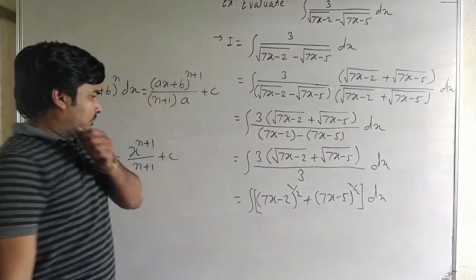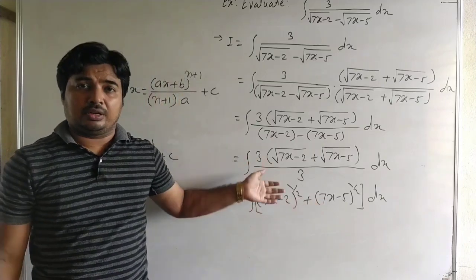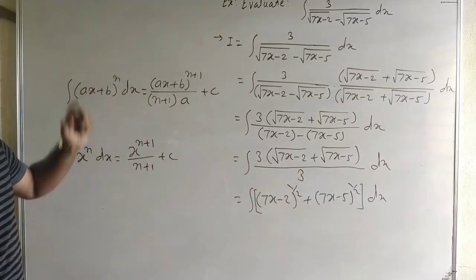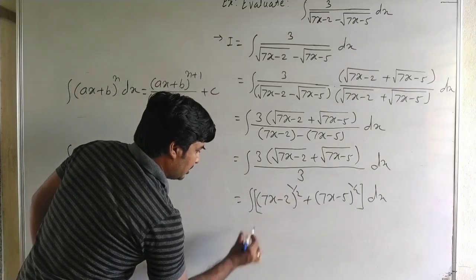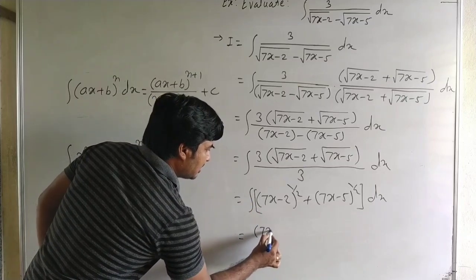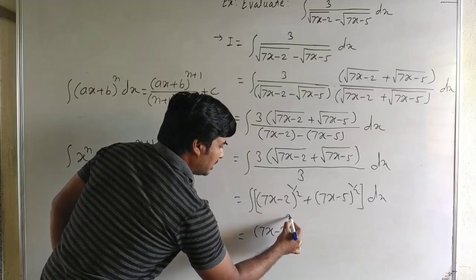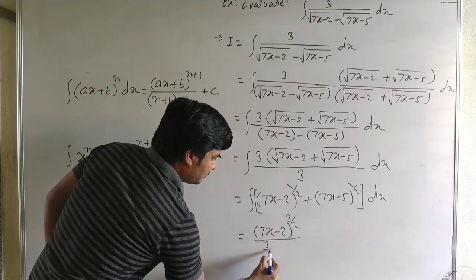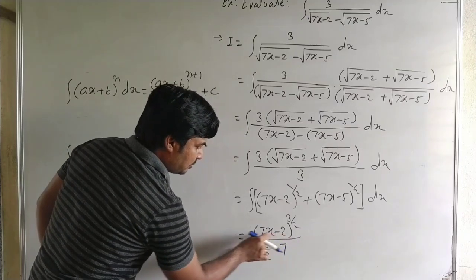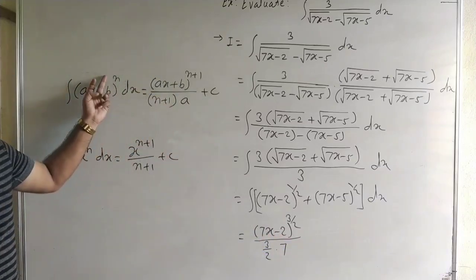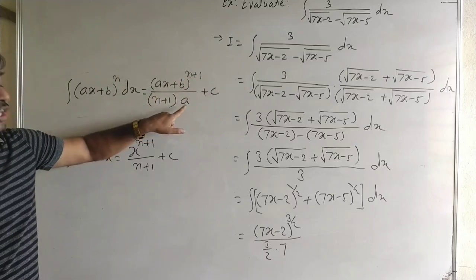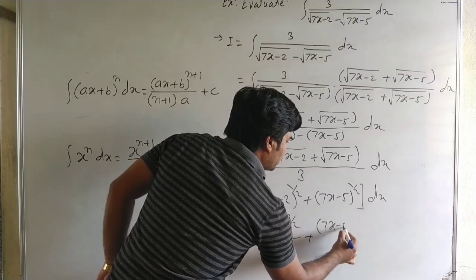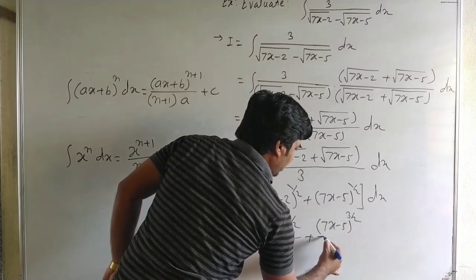We get the integral of 7x minus 2 to the power 1 by 2 plus 7x minus 5 to the power 1 by 2 dx. Both terms are in the form ax plus b to the power n. Using the formula, 7x minus 2 to the power 3 by 2 upon 3 by 2 into 7, plus 7x minus 5 to the power 3 by 2 upon 3 by 2 into 7, plus c.